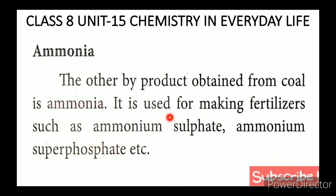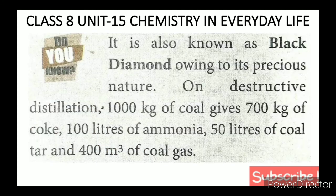Coal gas is used to make fertilizers such as ammonium sulfate and ammonium superphosphate. Coal is also known as 'black diamond' owing to its precious nature.